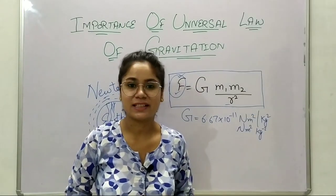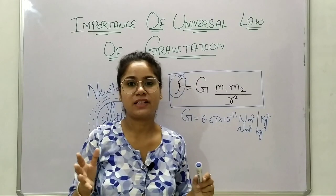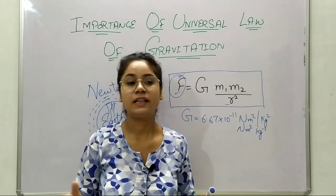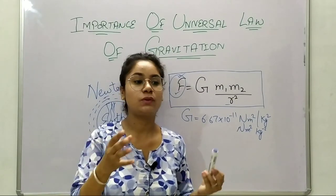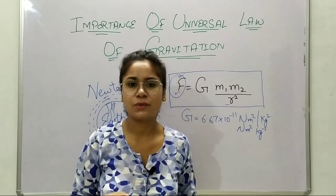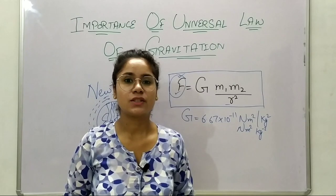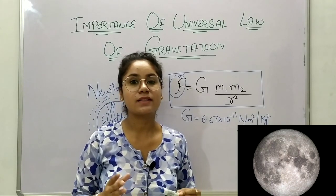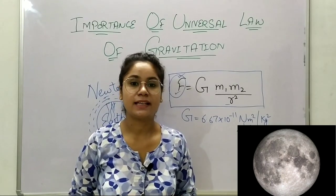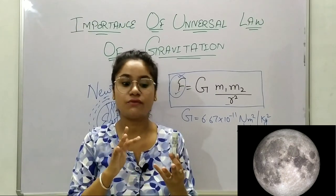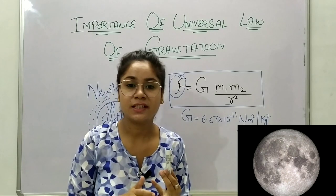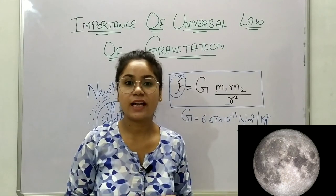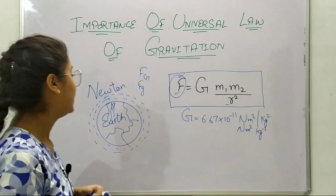Rainfall and snowfall happen because of gravity. If there were no gravity or gravitation, there would be no atmosphere, no clouds, no snowfall, no rainfall, and not a single organism would be able to breathe. There would be no life. You can consider the example of the Moon — on the Moon there is no atmosphere and therefore no life, because there is no gravitational force of attraction.